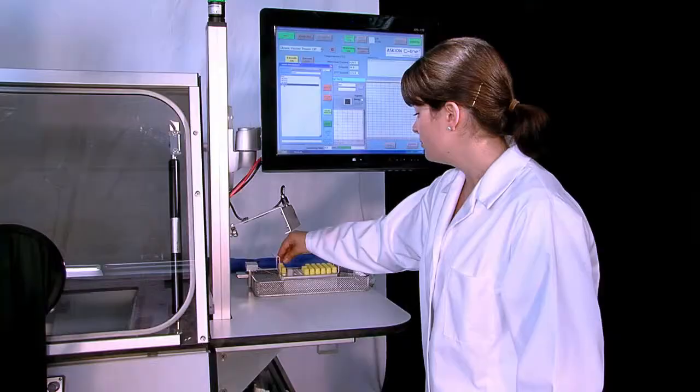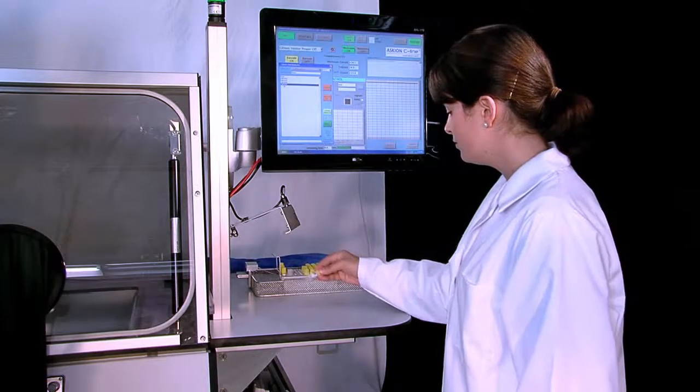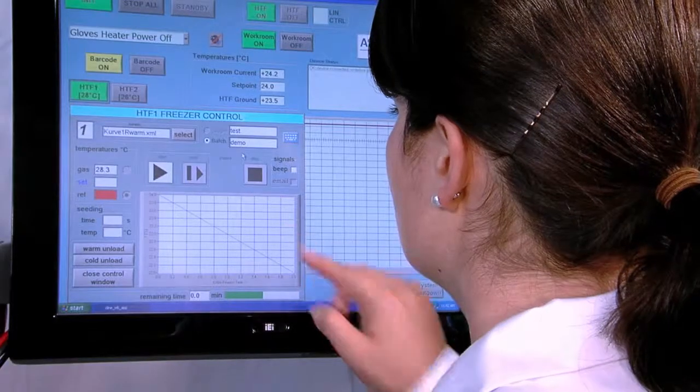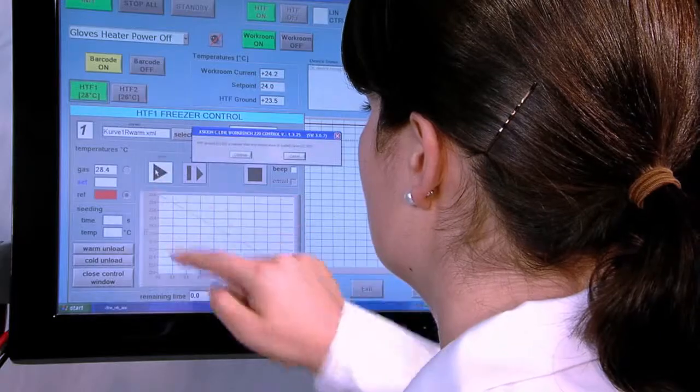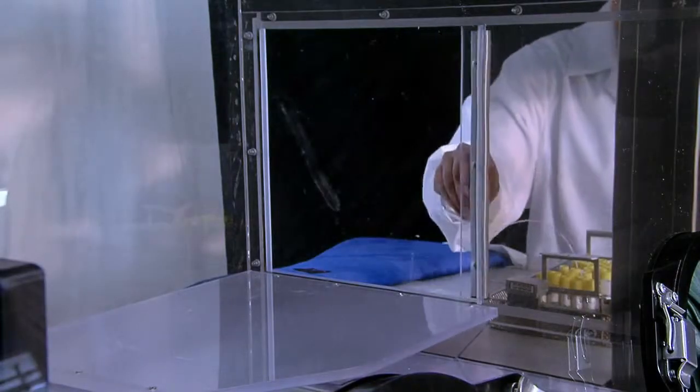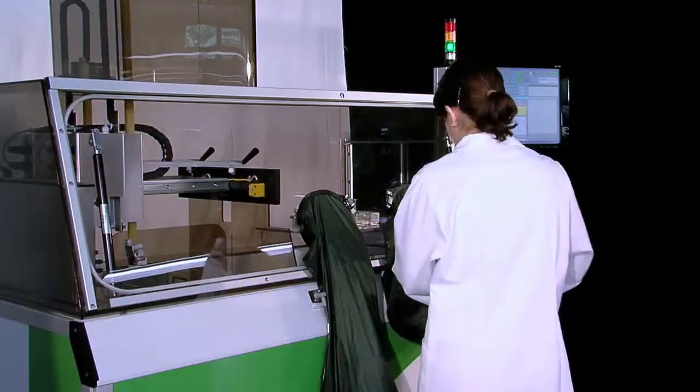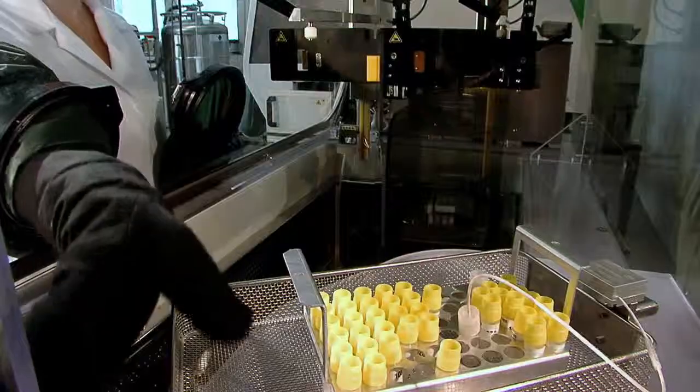Ascheon C-Line Workbench for the initial freezing and handling of your samples. Freezing graphs can be individually programmed. As a result, you can guarantee the best sample quality, for example, for survival and revitalization rates for cells.